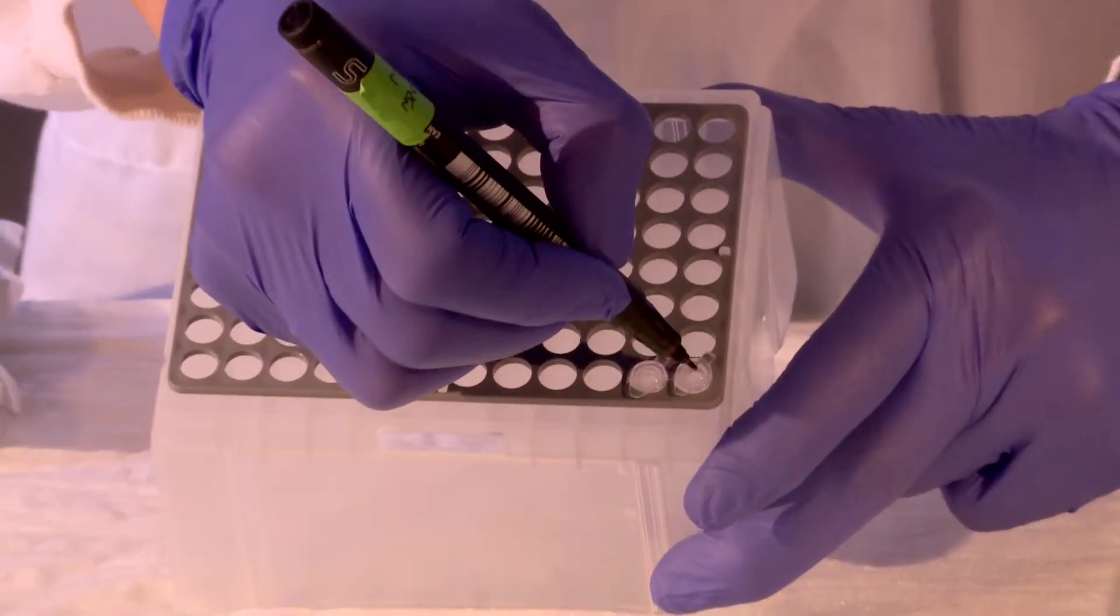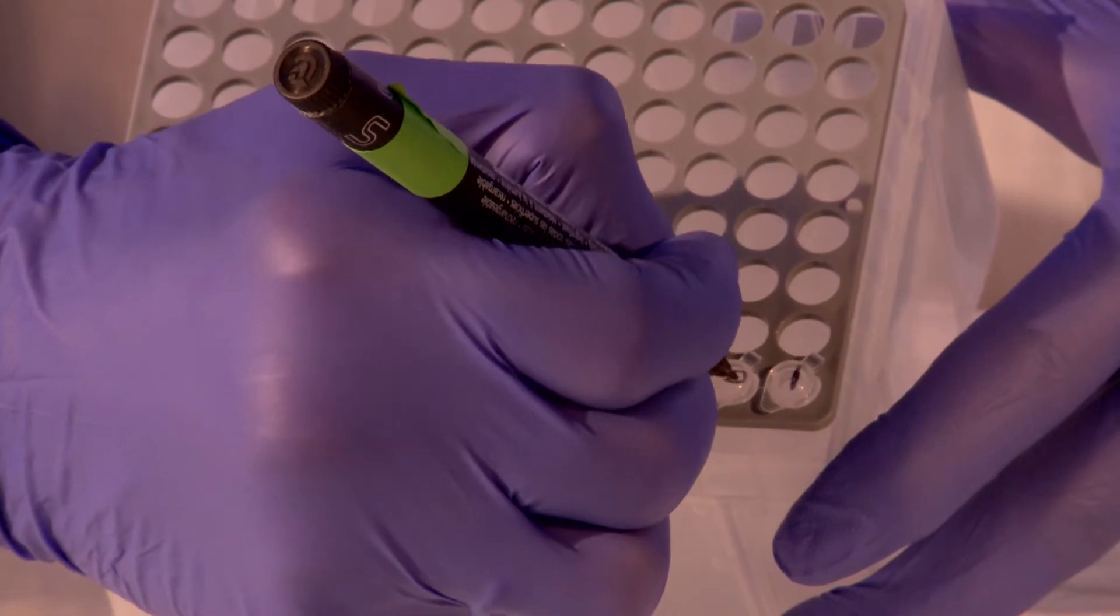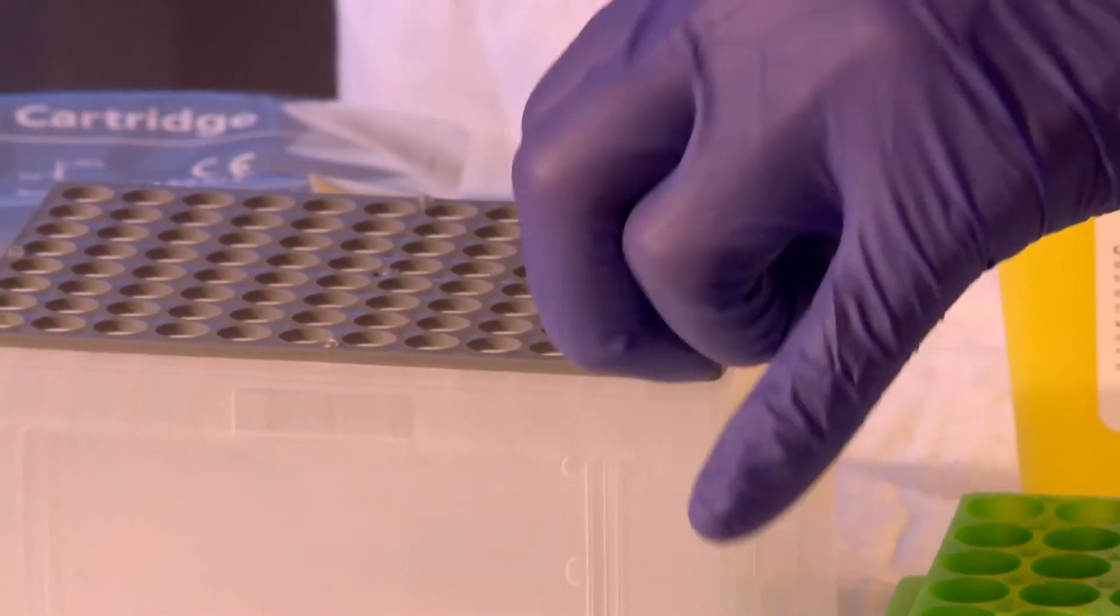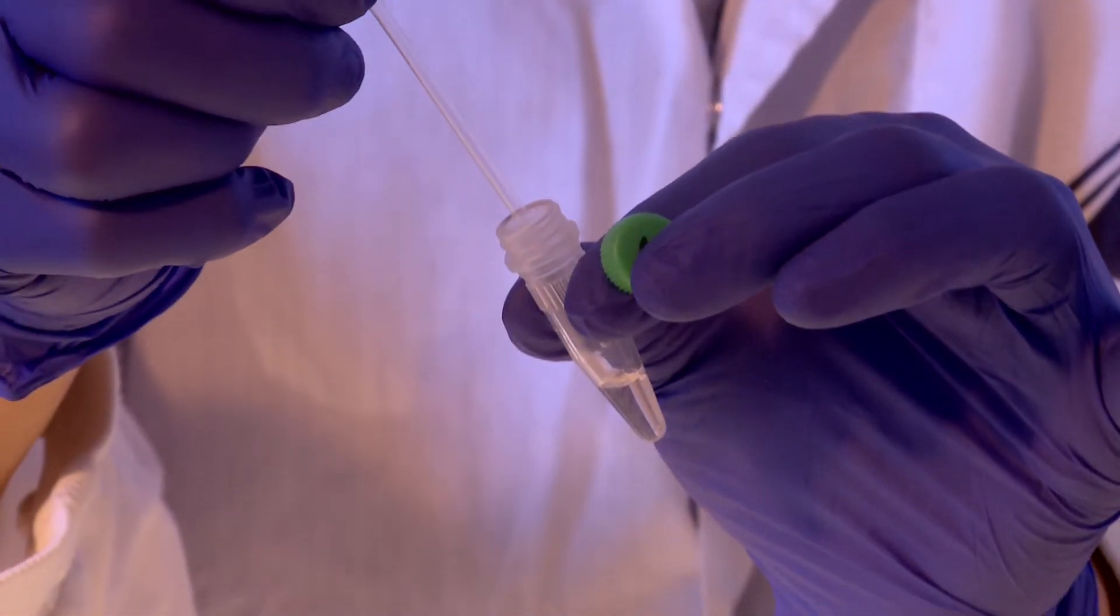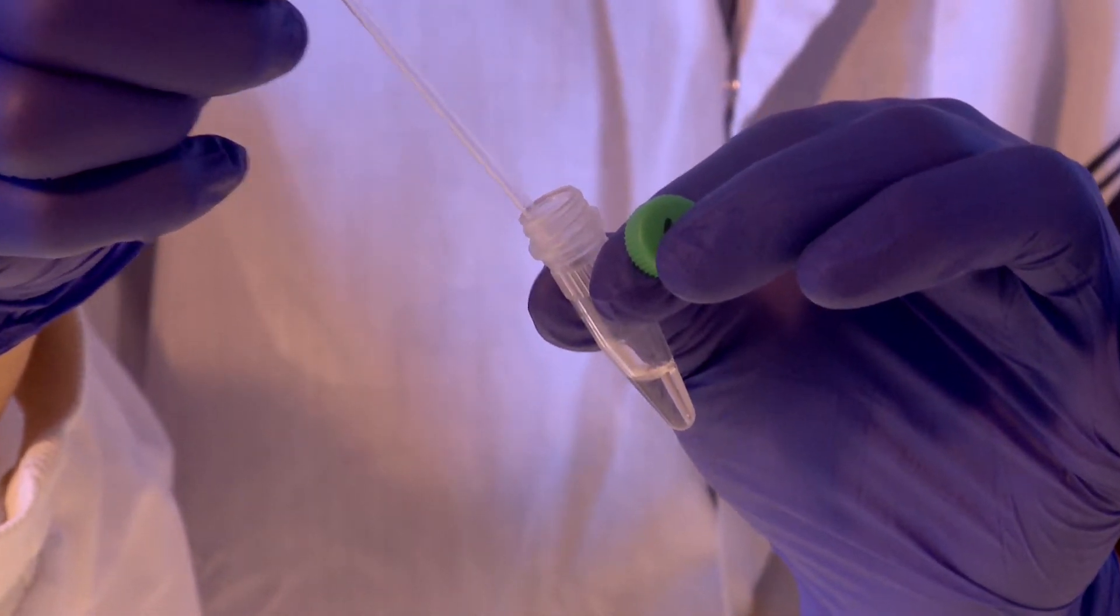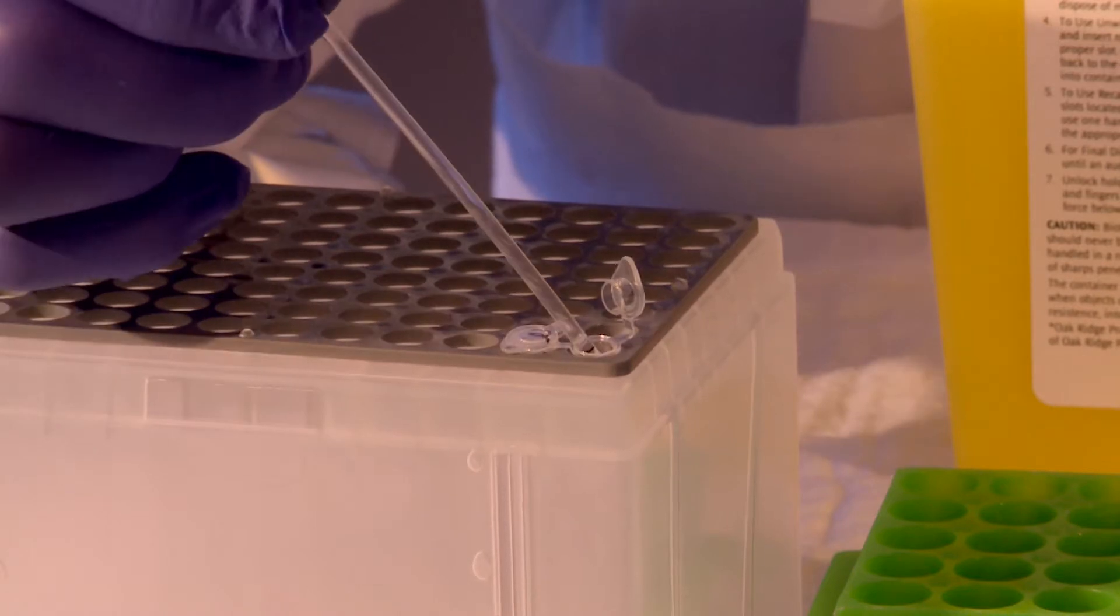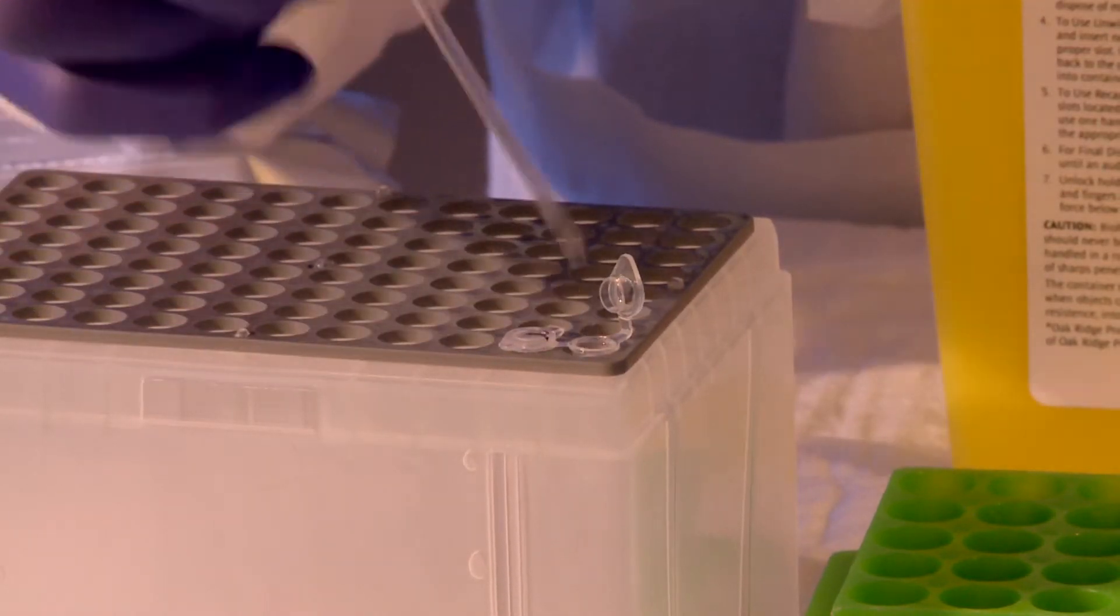Label the lid of each tube clearly for sample identification. Carefully open the lid of the reaction tubes one at a time. Using the disposable capillary tube or a micropipette, dispense 20 microliters of extracted DNA into the tube.